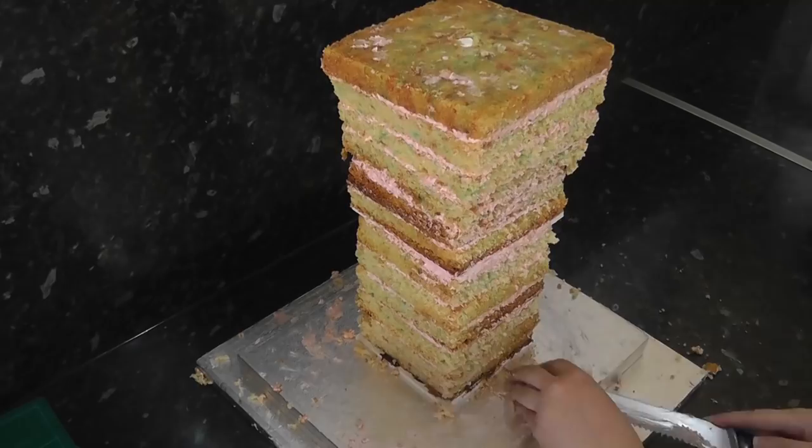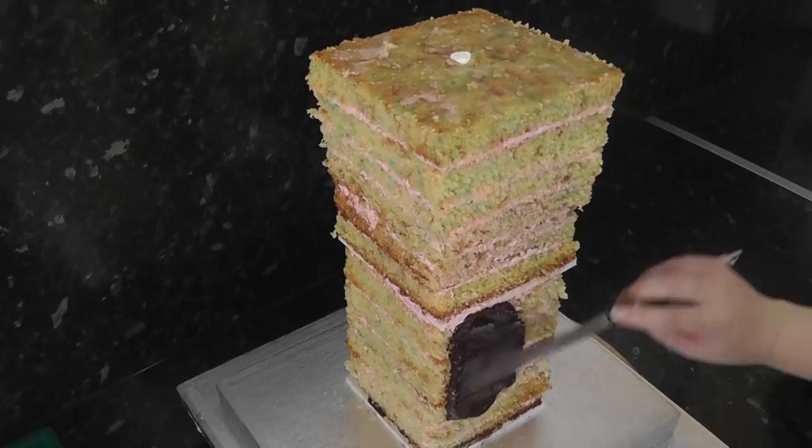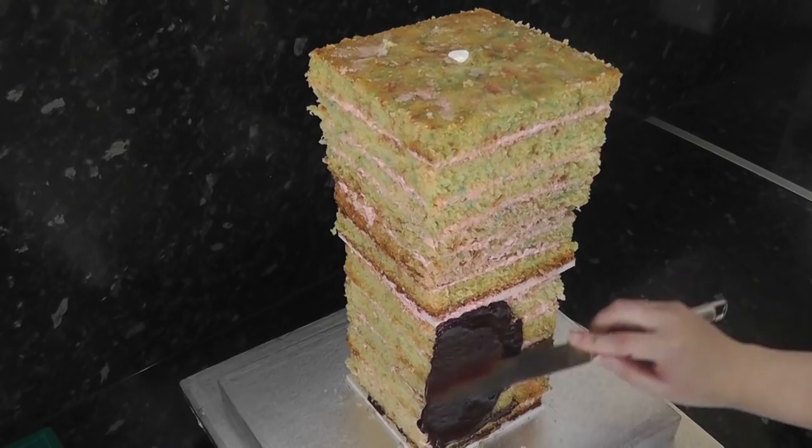Apply a thin, rough coat of ganache just to seal the sponge and all its crumbs. Don't worry about the wobbling, it's my overused cake stand. The cake is fine, I promise.